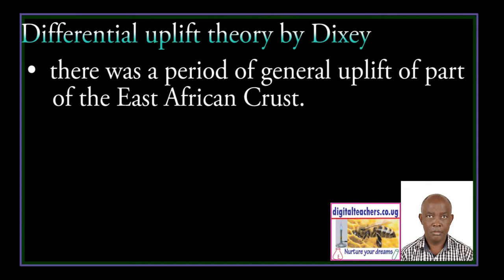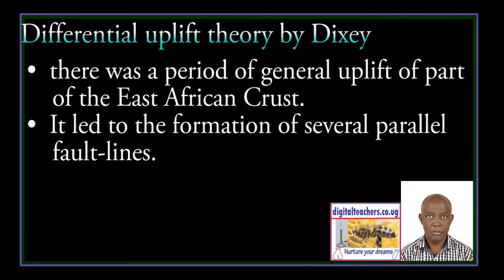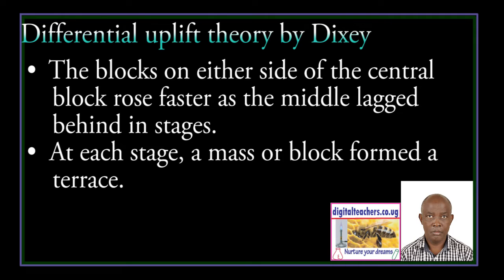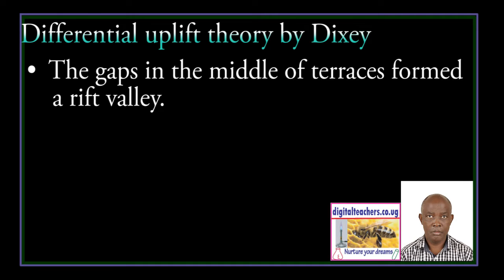The vertical displacement theory by Dickson proposes that there was a period of general uplift of part of the East African crust. This led to the formation of several parallel fault lines. The blocks on either side of the central block rose faster as the middle block lagged behind in stages. At each stage a half block formed a terrace, and the gaps in the middle of the terraces formed a Rift Valley, as illustrated in the diagram below.